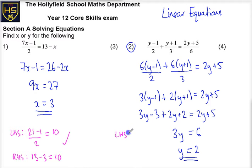We can check over here. It's a little bit more complicated but we've got a value of 2. We're going to do 2 minus 1 over 2 plus y is 2 so 2 plus 1 over 3. The left hand side of this equation gives us 2 minus 1 gives us a half plus 3 over 3 which is 1 which gives us 1 and a half.